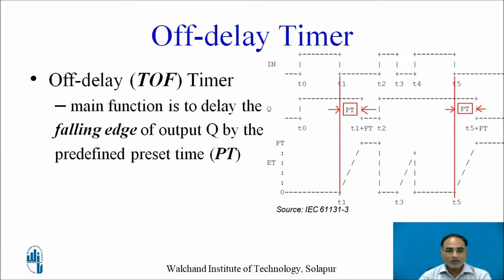Let us learn the operation of the off delay timer with the help of the waveform shown on the slide. The main function of the off delay timer is to delay the falling edge of output Q by a predefined preset time. At t1, input changes from 1 to 0, and after PT duration, output changes from 1 to 0. So a delay of PT value is added between the falling edge of input and the falling edge of output.